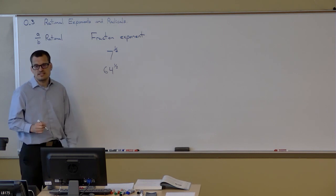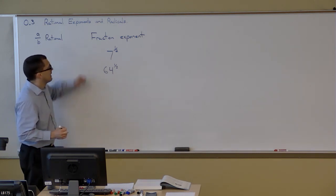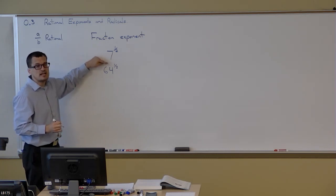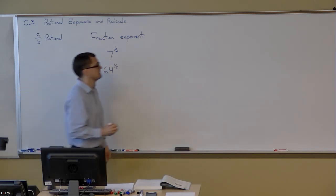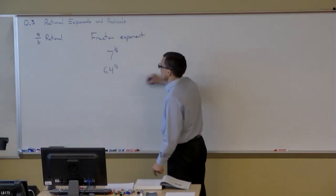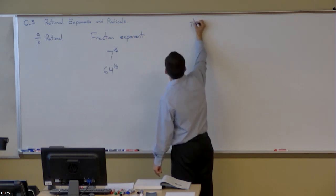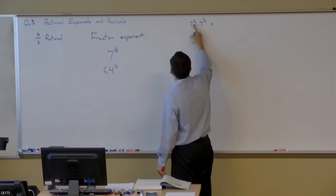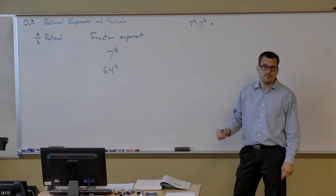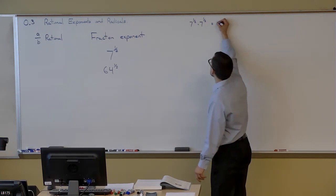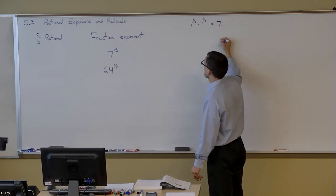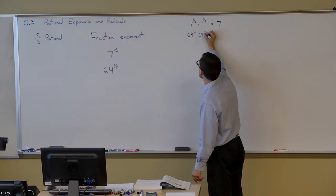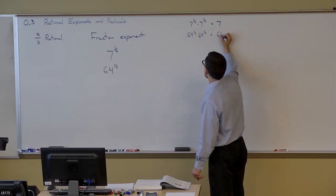Let me start with the 64 example. A one-half power still is an exponent, so it still has to obey our exponent rules. If you multiply 64 to the one-half times 64 to the one-half together, that's the product rule, and that forces us to add exponents, so you get 64 to the first power, or just 64.